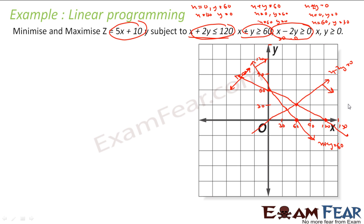Also, we have x > 0 (the y-axis boundary) and y > 0 (the x-axis boundary). So my final solution will be this area. If you see that each line constrains to one side - this side, this side, this side - and this is my feasible area.